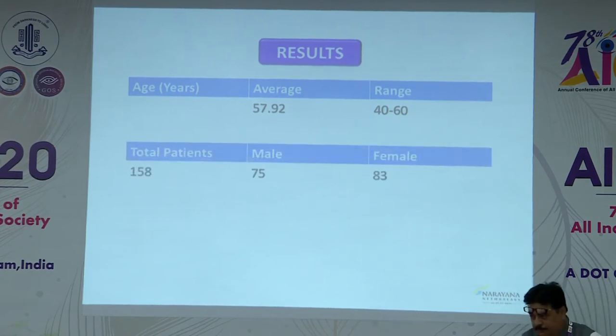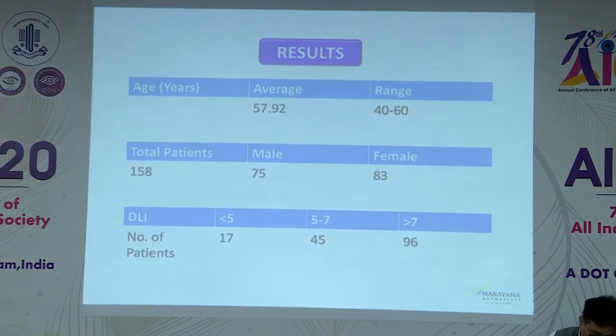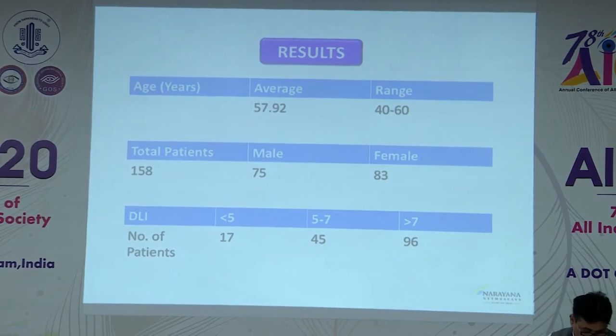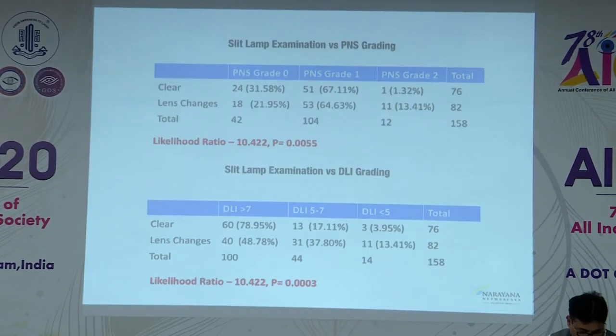The average age was 57.92 years. There were 75 male and 83 female patients. DLI less than 5 was found in 17 patients, DLI 5 to 7 in 45 patients, and DLI more than 7 in 96 patients.